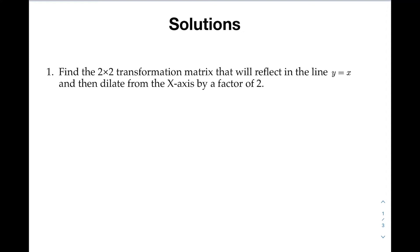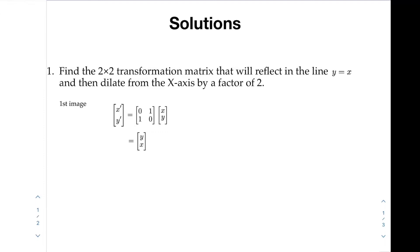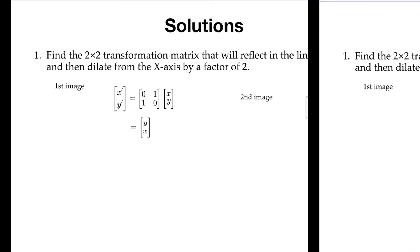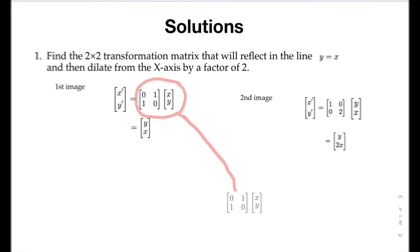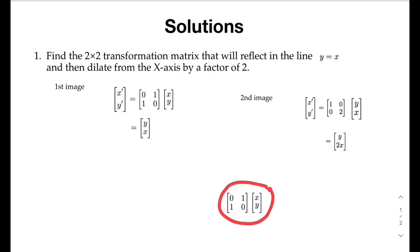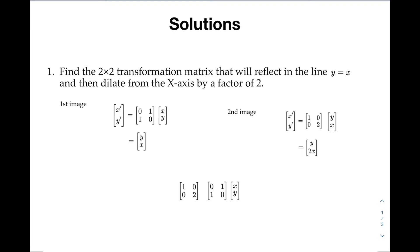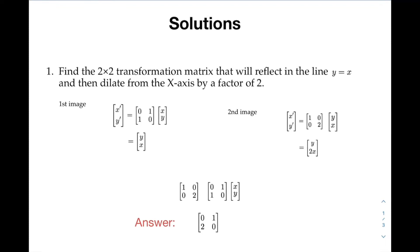Then we apply the matrix for dilation from the x-axis by a factor of 2 to the first image to achieve the final image. We could have done all this with one calculation: apply the reflection first and then apply the dilation to this result. Multiplying these two matrices gives us the matrix that will perform the reflection followed by the dilation. Notice the order in which the matrices are multiplied — the reflection matrix is here and the dilation matrix is in front.